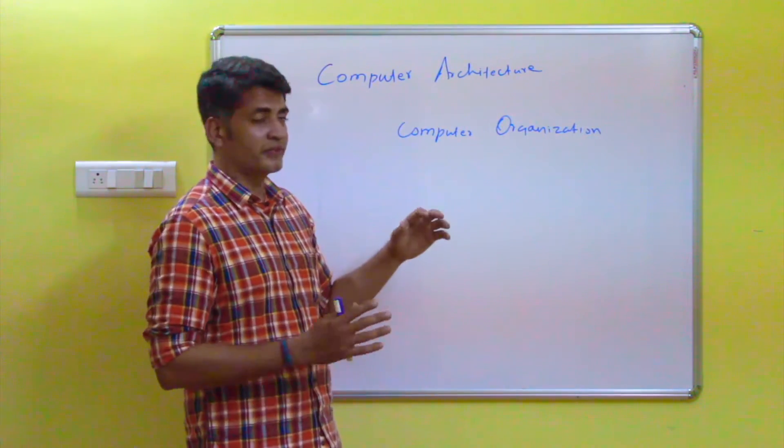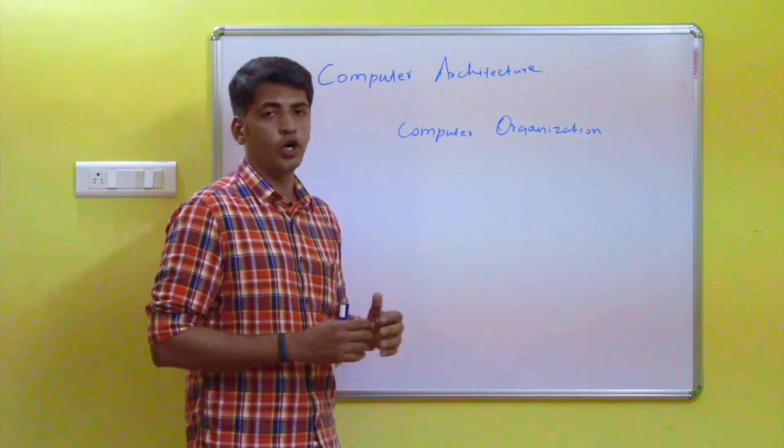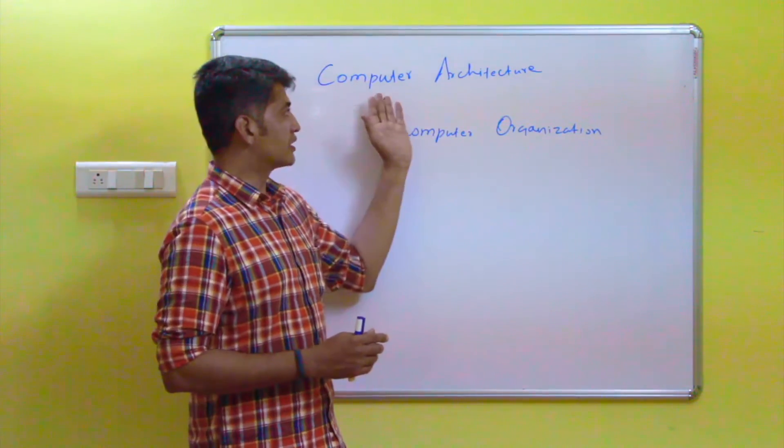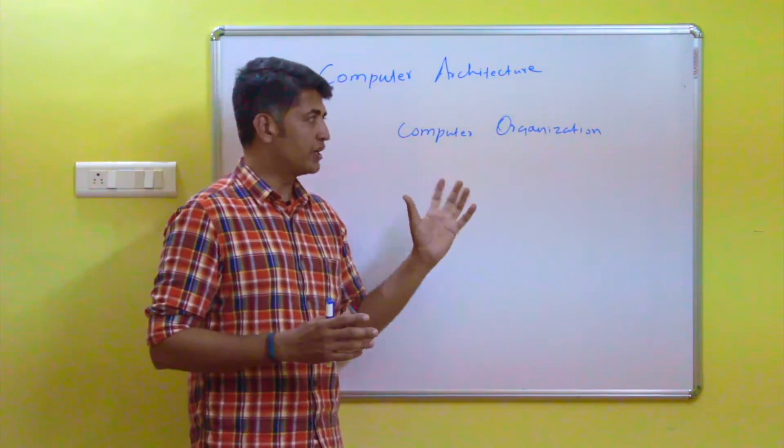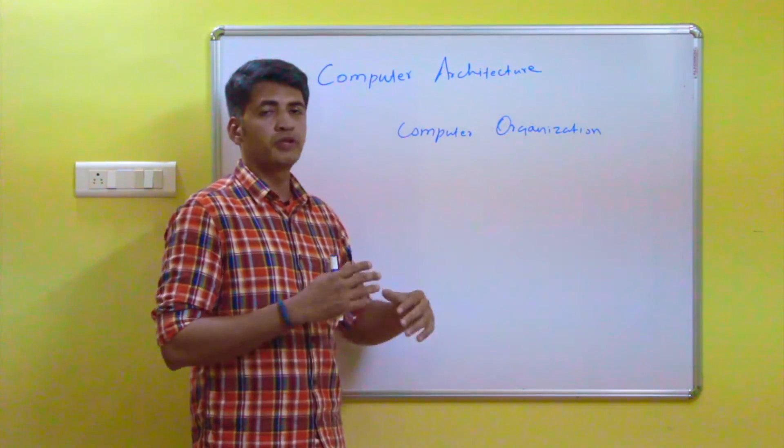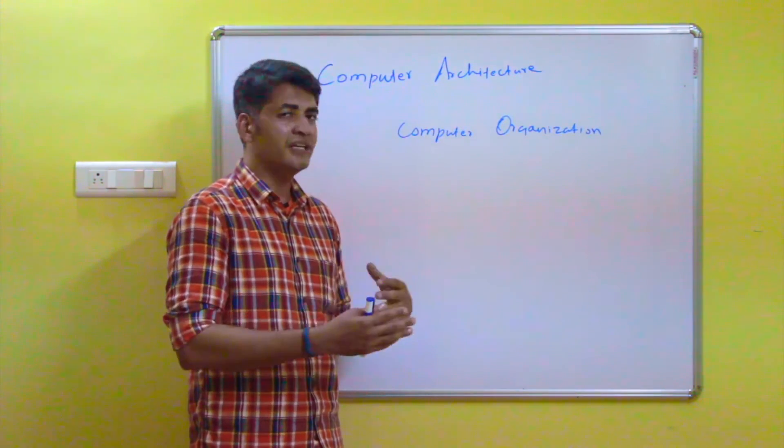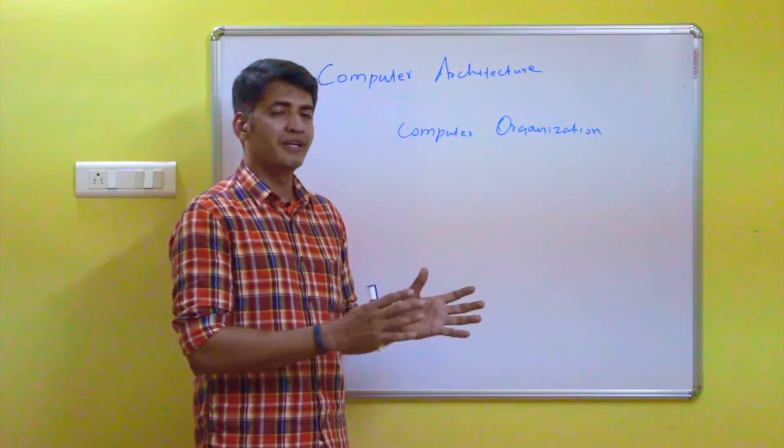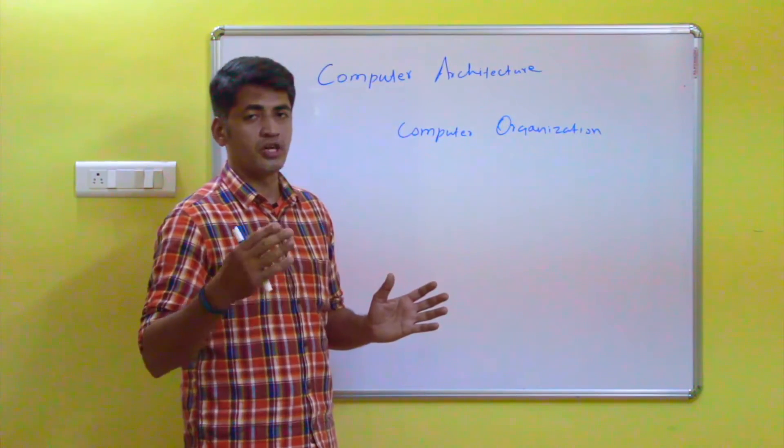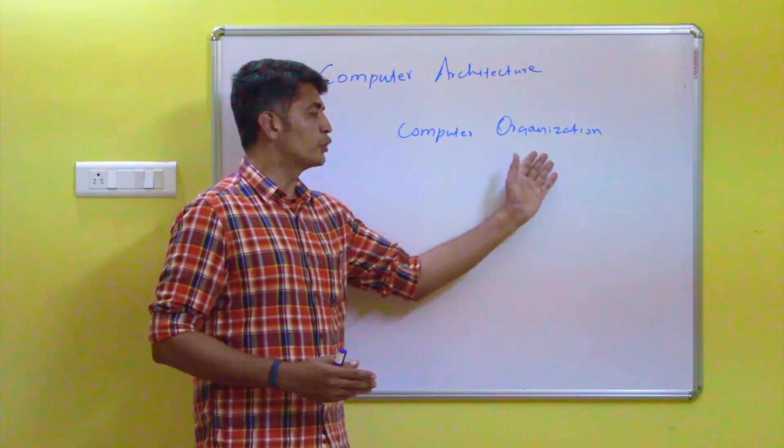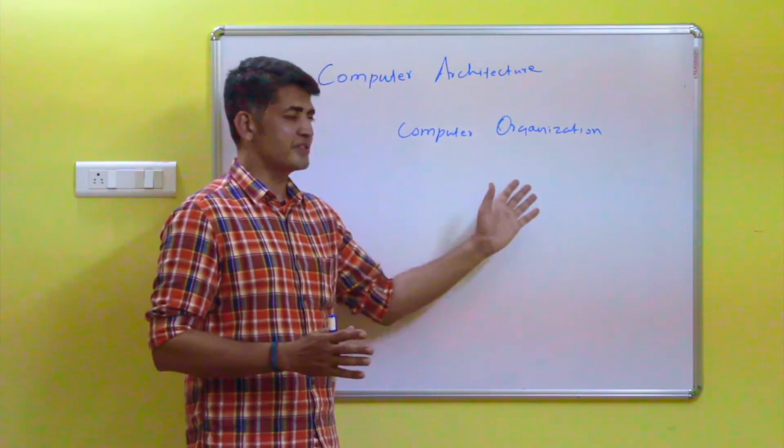how you can give the difference between architecture and organization. So computer architecture always refers to the attributes that are visible to the programmer. If the programmer changes anything in the attributes, automatically it will give a direct impact on the logical execution of a program. But here, the computer organization always refers to the functional